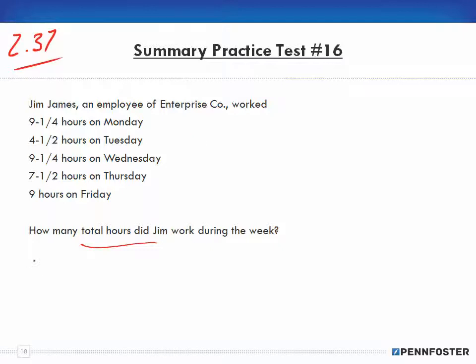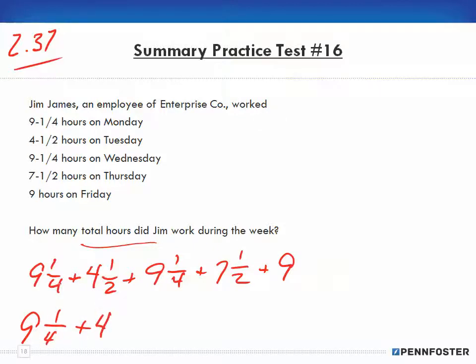So I have 9 and a quarter plus 4 and a half plus 9 and a quarter plus 7 and a half plus 9. We have different denominators, so we need to convert them all into the same denominator. Two can go into four, so our lowest combination is going to be 4. Two in the four goes twice, so 2 times 1 is 2. Now I have 9 and a quarter, 4 and 2 fourths, 9 and a quarter, 7 and 2 fourths, plus 9.